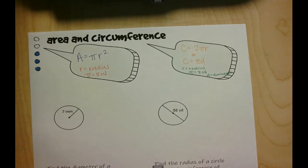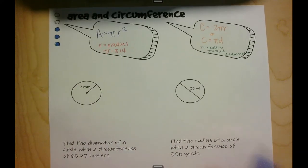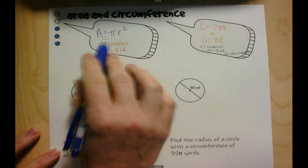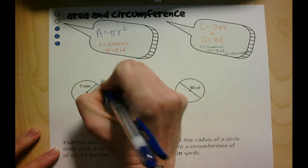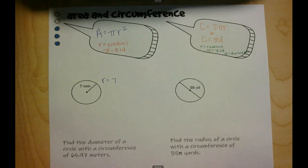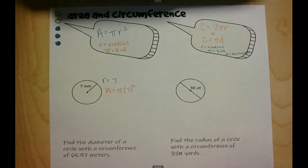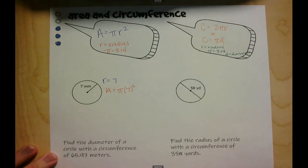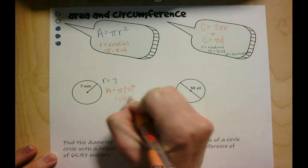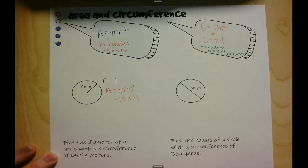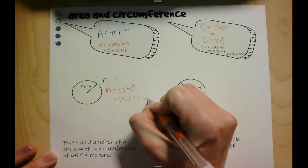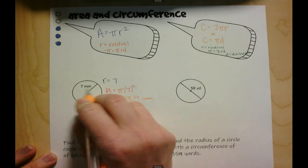Let's find the area and circumference of some circles. For the first circle, the radius is 7. Area equals pi times r squared, so we plug in: area equals pi times 7 squared. Only the 7 gets squared, not pi. When we calculate that, we get an area of 153.9, rounded to the nearest tenth.